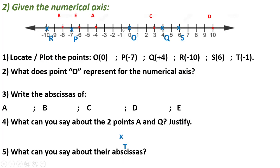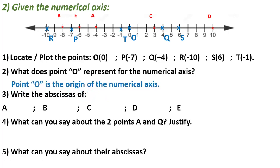Part two: what does point O represent on the numerical axis? Point O represents the origin of the axis. From O you always go to the positive side or to the negative side. Part three: we should write the abscissas of points A, B, C, D, and E.